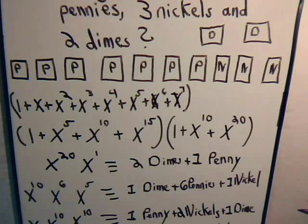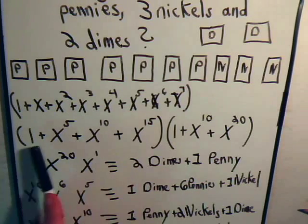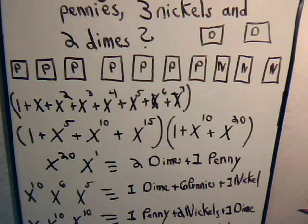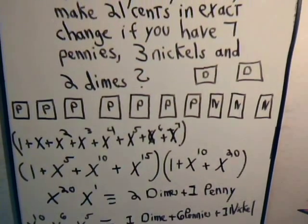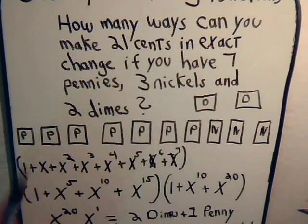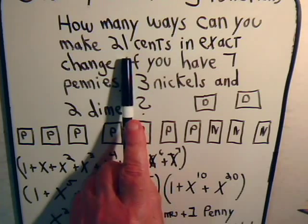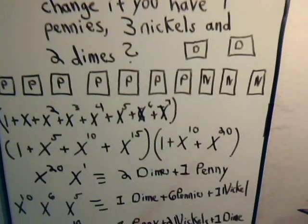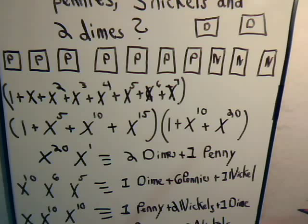Then once we did that, we were interested, once we multiply all this together, what is the coefficient of x to the twenty-one? And because that's our problem says, how many ways can you make twenty-one cents? And that would be the coefficient of x to the twenty-one.